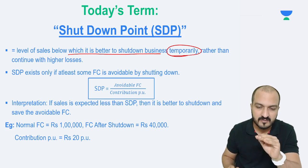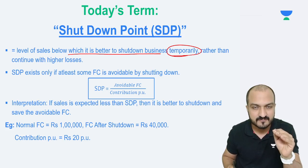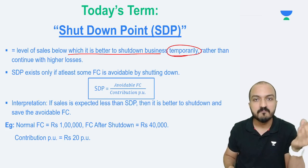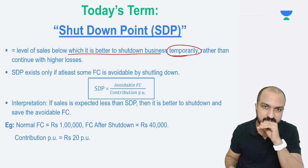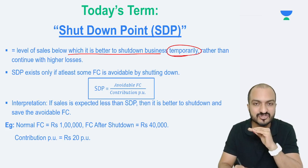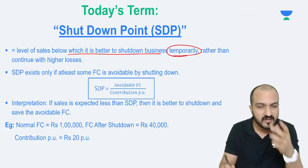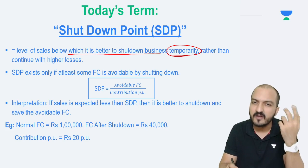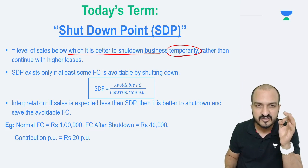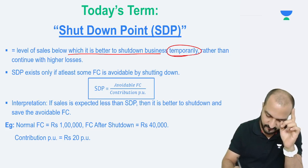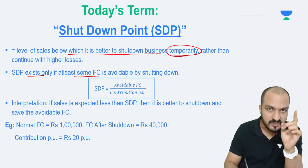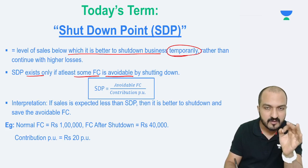Below breakeven point, you start incurring losses. Below shutdown point, you start incurring losses more than the shutdown loss. So shutdown point is the level below which it is advisable to shut down the business because continuing gives you even more losses. This concept comes into picture only and only if there exists some fixed cost which is avoidable by shutting down.